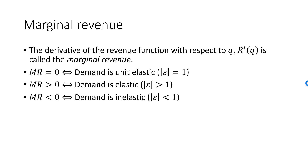Marginal revenue is strictly negative if and only if demand is inelastic. An increase in quantity will decrease revenue when demand is inelastic. For a linear demand function, marginal revenue is strictly less than zero in the lower right stiff region of the demand curve.